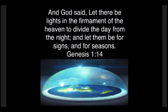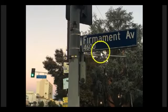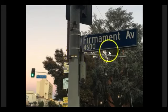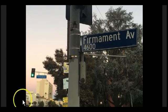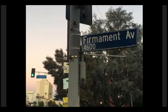Look how these Masons love to mock — those that own and control our society. This is a cross street on Ventura in L.A. They have Firmament Avenue. This is exactly how they mock. People are driving by the street every day and night, going to their 9-to-5 job, and are clueless to what's right in front of them.